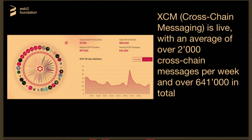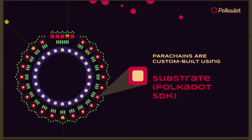In terms of these chains interacting with each other, we use a technology called XCM — cross-chain messaging. This is live, with an average of over 2,000 cross-chain messages per week and over 640,000 in total.